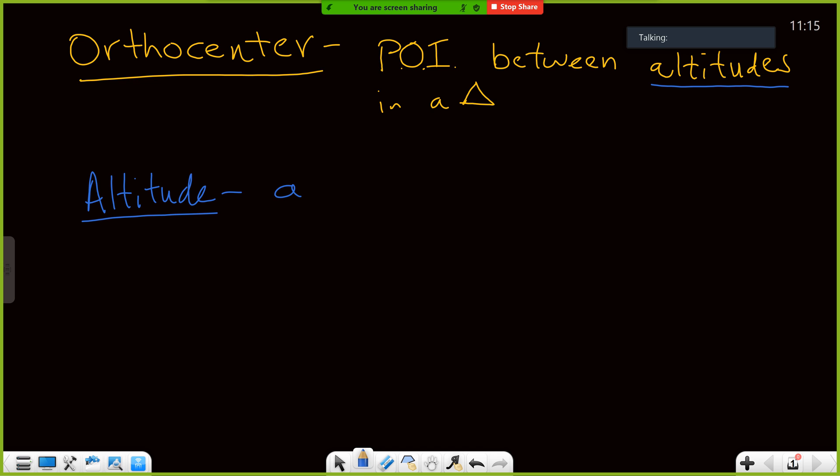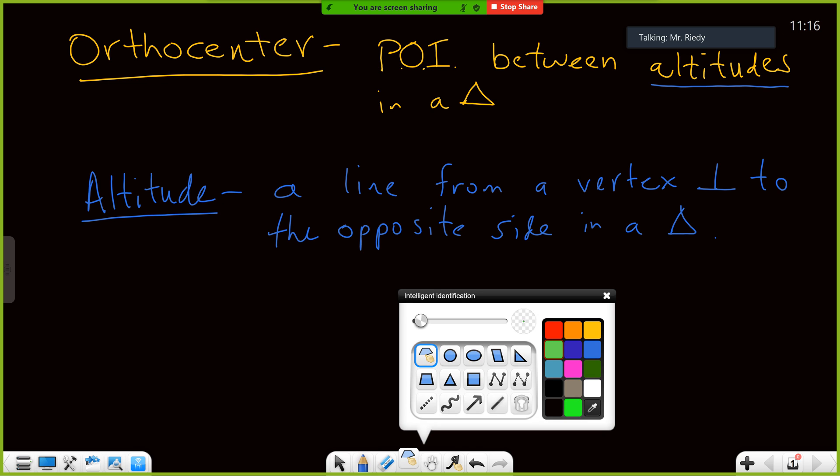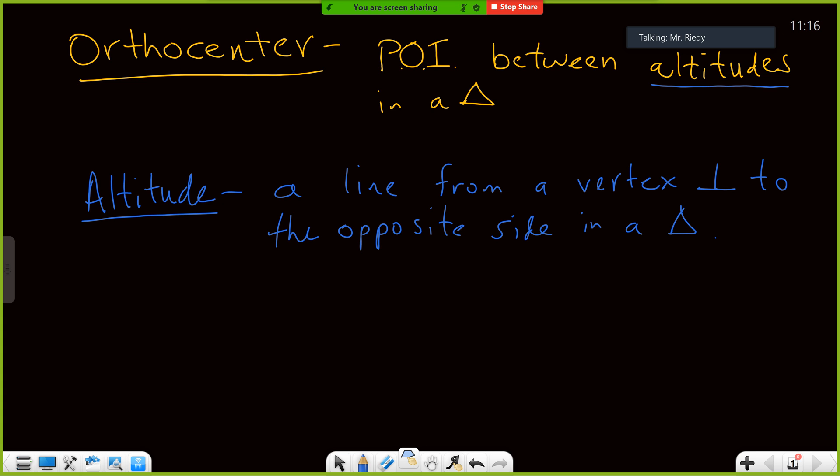A line from a vertex perpendicular to the opposite side, which looks very similar to a median where a median was a line from a vertex to the midpoint of the opposite side. Now we're not doing midpoints, we're doing perpendicular. For those of you that are visual learners, let me do a quick sketch here and show you what I'm talking about.